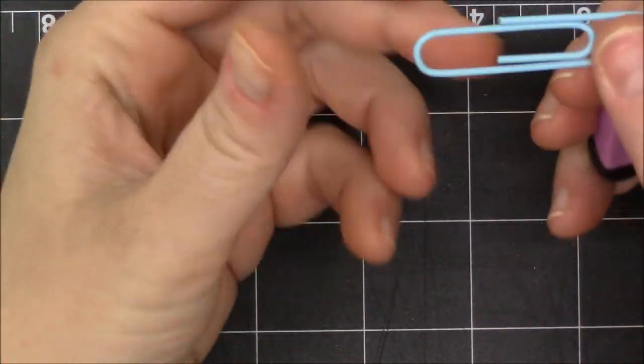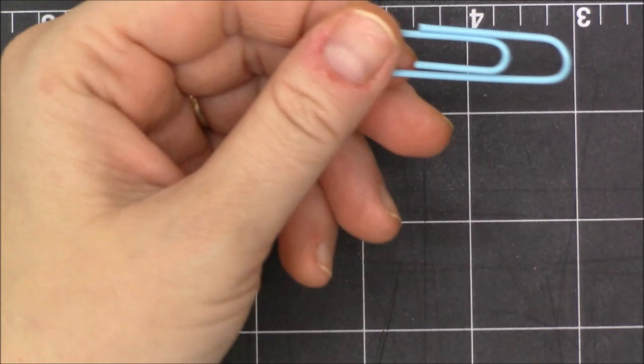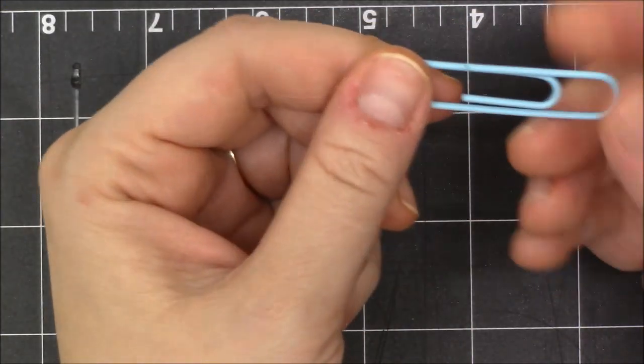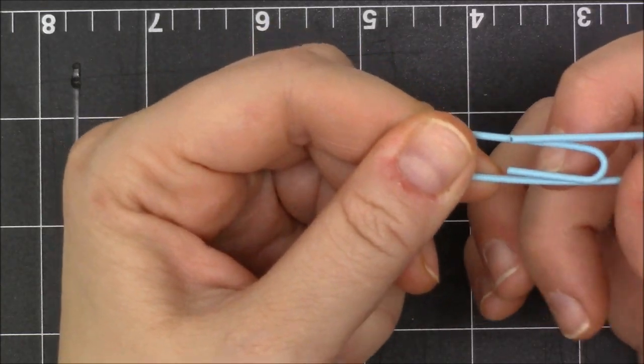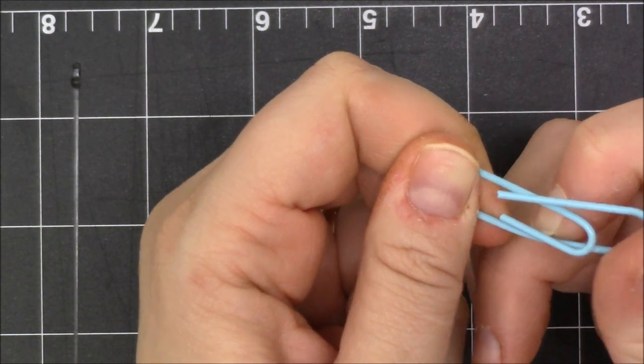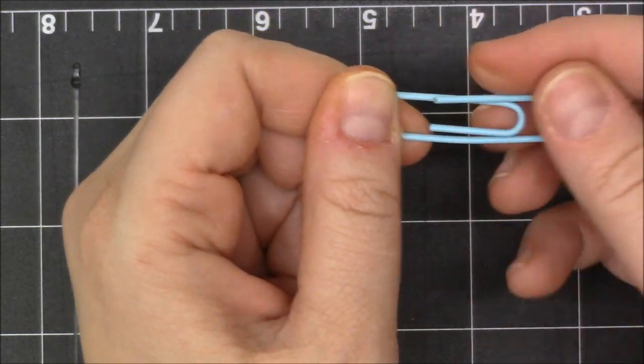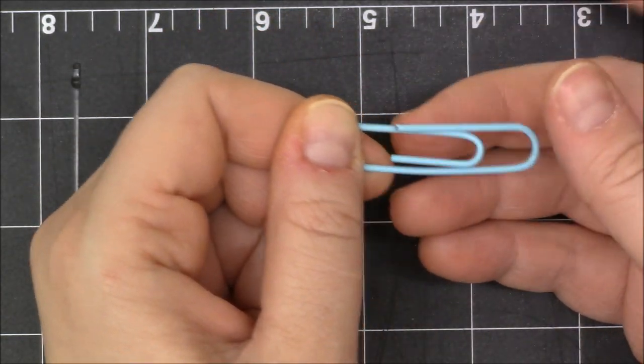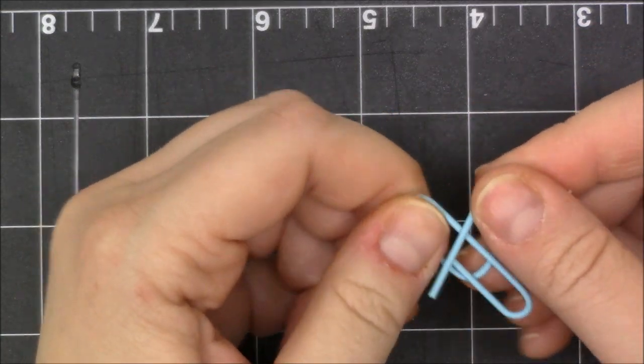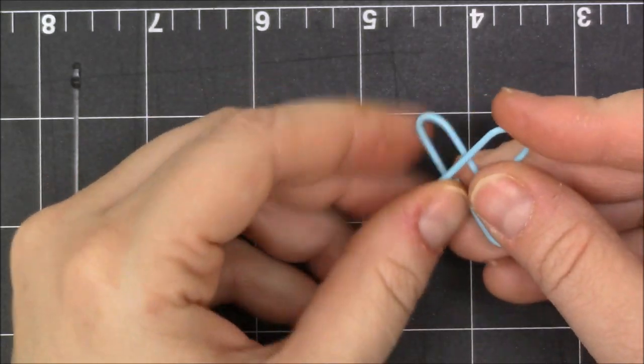We're going to take our needle nose pliers - you actually don't have to, I'll do it without - and I'm going to find the middle of the bottom again with my fingernail, somewhere around about. Make sure that you have this top leg going forward, just like that.